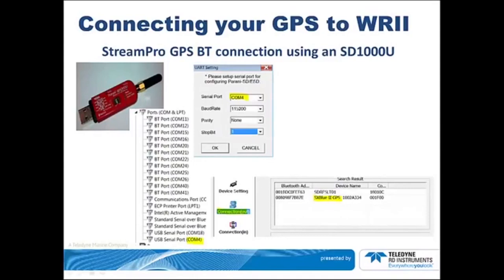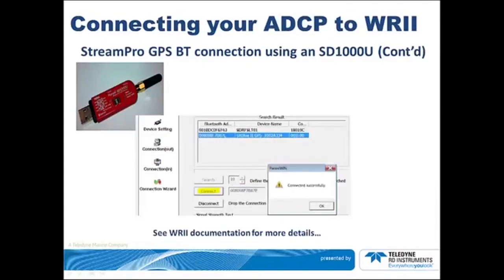A separate Bluetooth connection is needed for the GPS to ensure that there is no latency in the GPS data. A SENA SD1000U has been found to work well for the GPS connection. The SD1000U uses the Piranni Wind software for its configuration. When you plug in the SD1000U to your laptop, observe which new serial port appears — COM 4 in this example. Open the Piranni Wind software, select the serial port and baud rate. Click Connection Out and click Search. Select your device and click Connect. Remember to close the Piranni Wind software and use the same COM port number to run either BBtalk or Wind River 2.